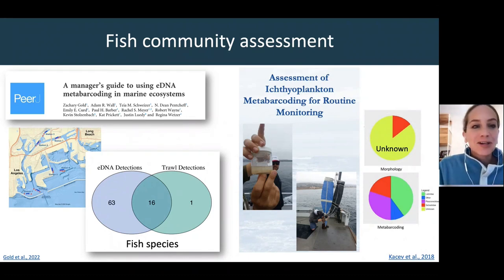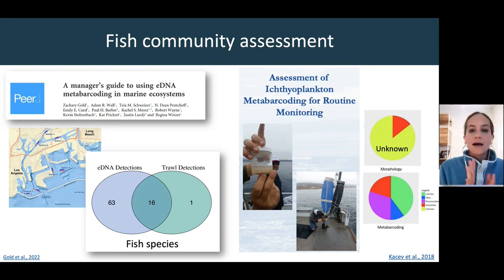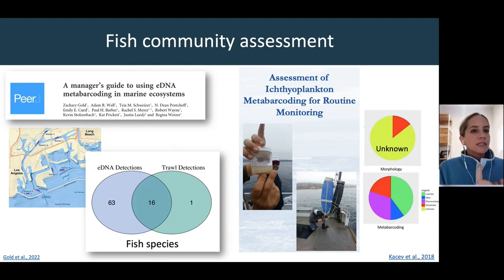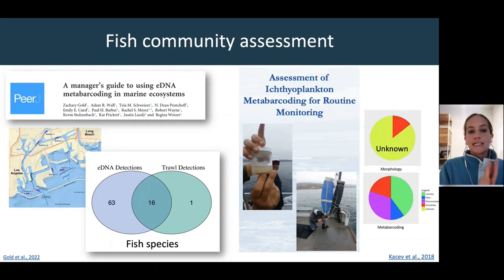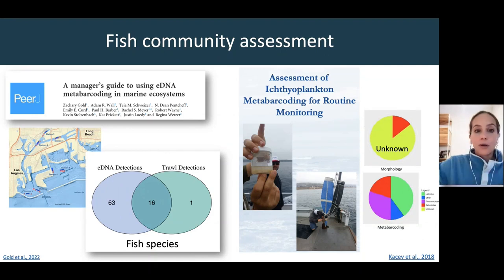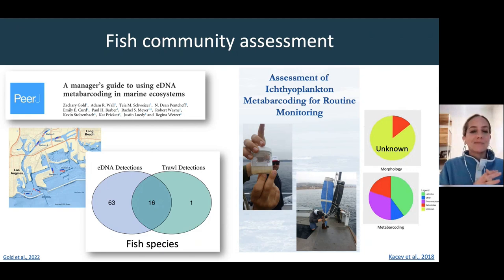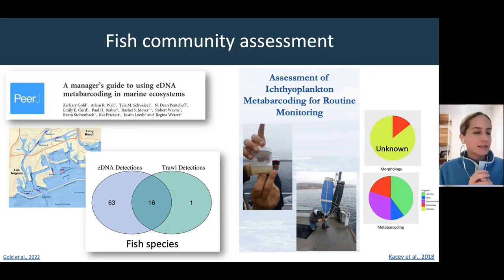The last couple of examples come from right here in our own backyard — different eDNA-based approaches to fisheries assessments happening in Southern California through the Southern California Bight Regional Surveys. One was focused in the Port of Los Angeles and Port of Long Beach, where water eDNA samples were collected alongside traditional trawl-based surveys. Using a DNA metabarcoding approach, the DNA-based approaches identified just about as many species — with the exception of one — plus a whole host more additional taxa compared to the traditional trawl-based surveys.